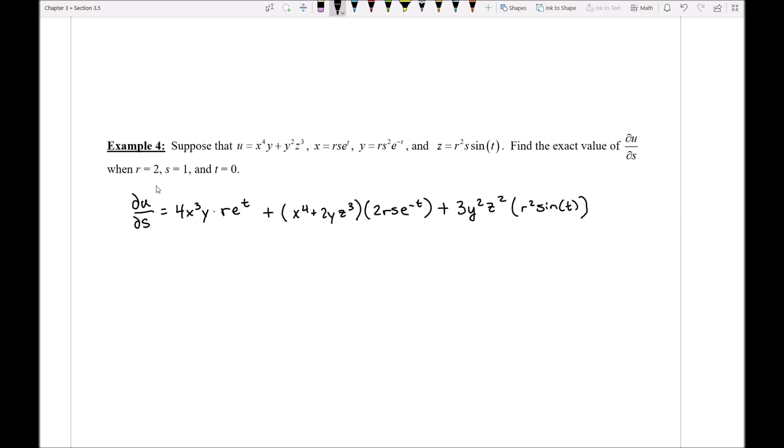Now, since I want to evaluate this derivative at these moments, I'm just going to quickly go ahead and figure out what X, Y, and Z are at these moments in time. So I'll quickly say that when R is equal to 2, S is equal to 1, and T is equal to 0, we get X is equal to 2, looks like Y here is also going to come out as 2, and I should get that Z should result in 0, since sine of 0 is going to produce 0.